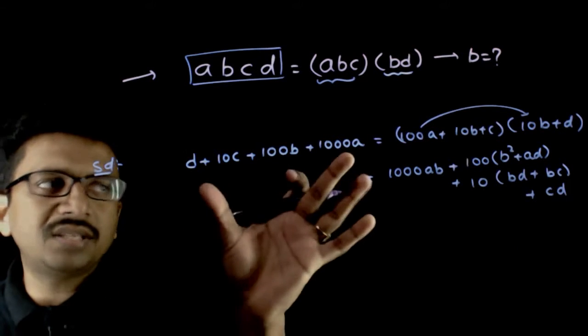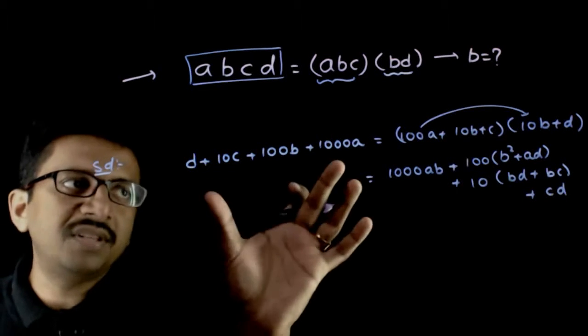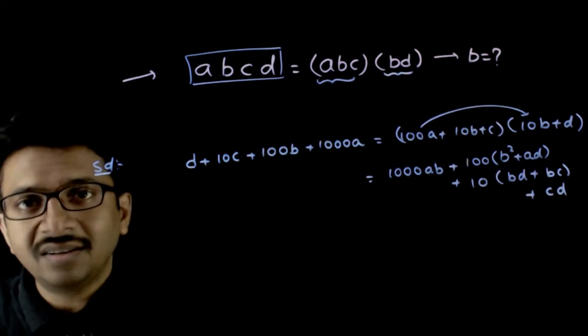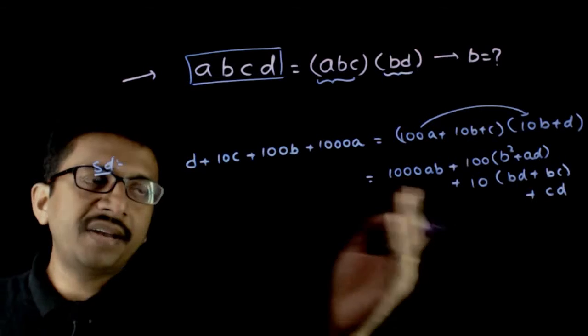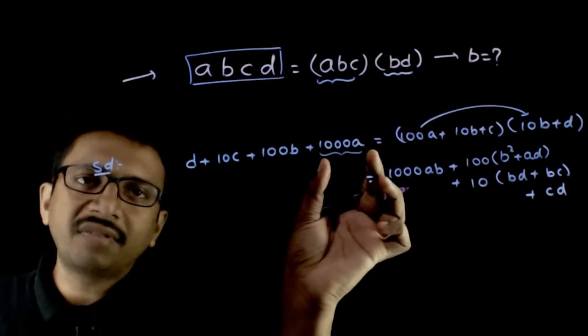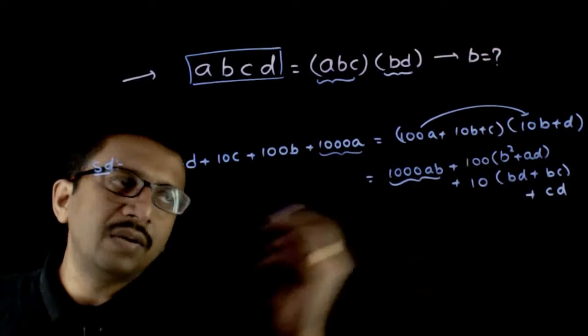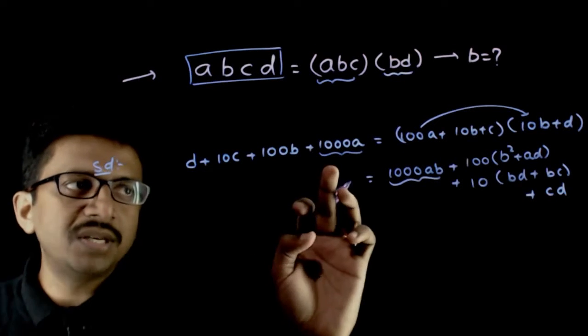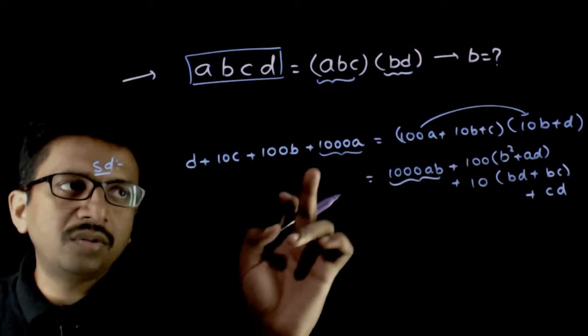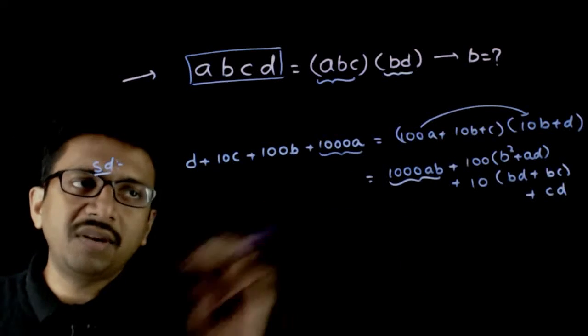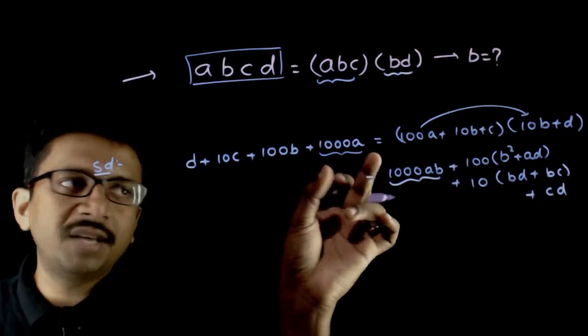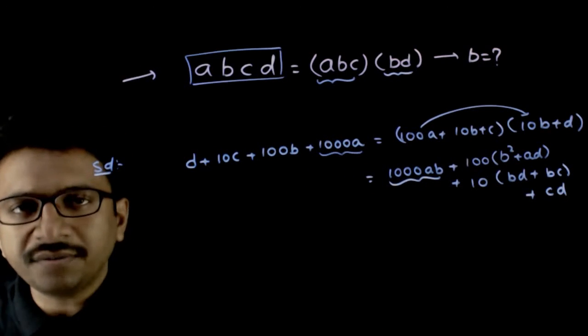This will be equal to this. If these two have to be equal, here you have 1000A, you have 1000AB here. If these two have to be equal, the thousands place of this number should be same as the thousands place of this number.